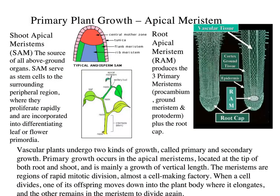Plants grow tall and down into the ground — that's known as primary growth. Primary growth happens through what's called the apical meristem. Think of apical as the very top or very bottom — the apical meristem is at the very top and the root apical meristem is at the very bottom, allowing the plant to grow up and down into the ground.